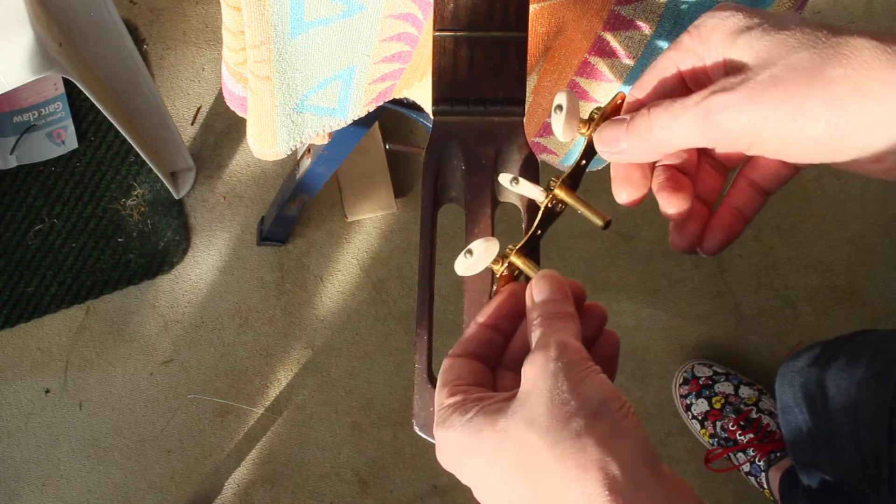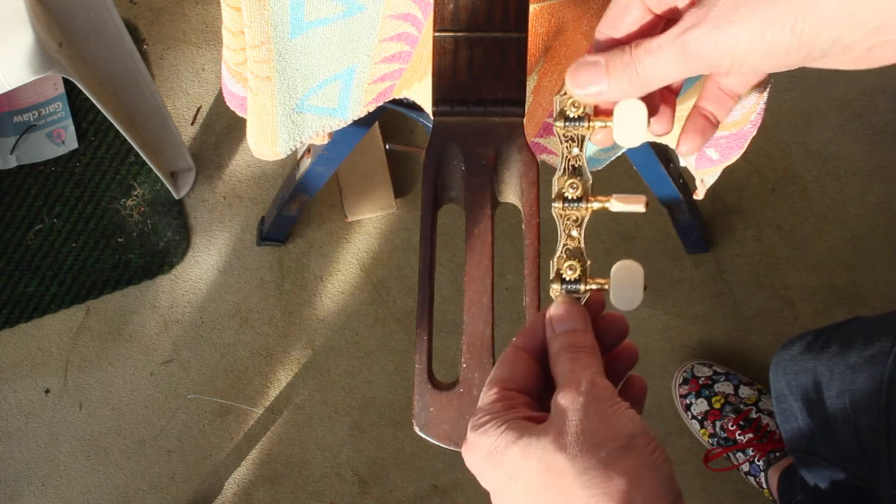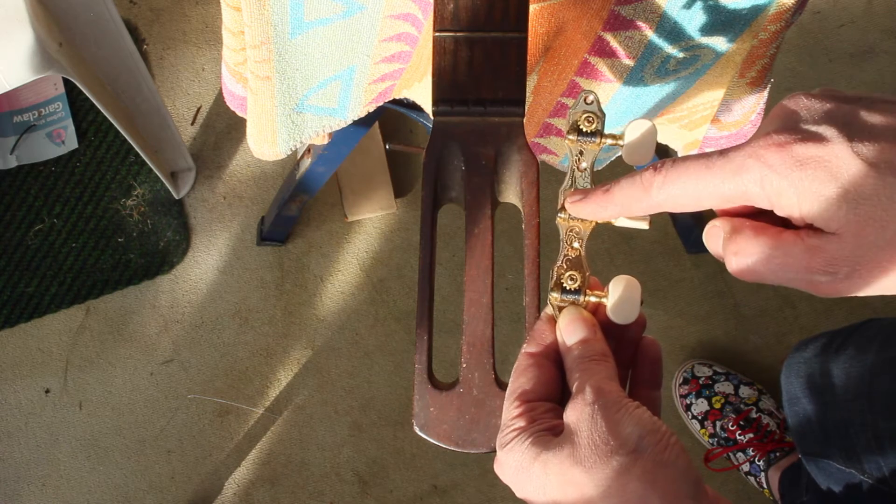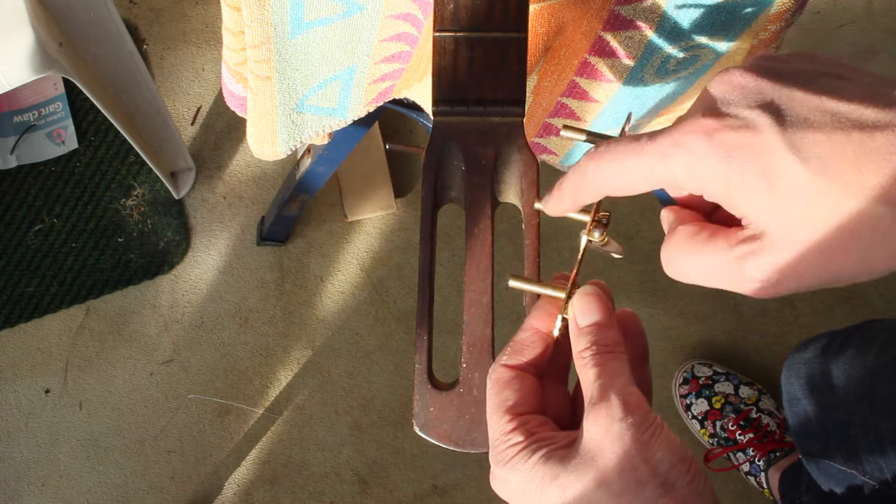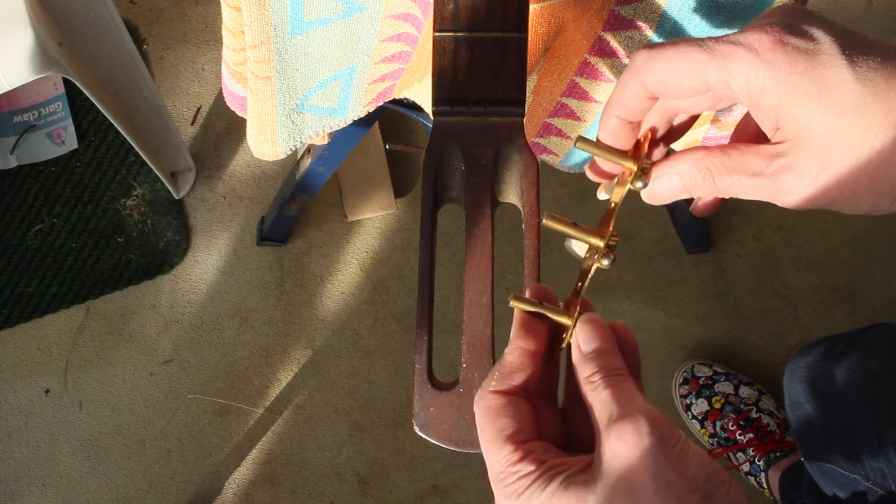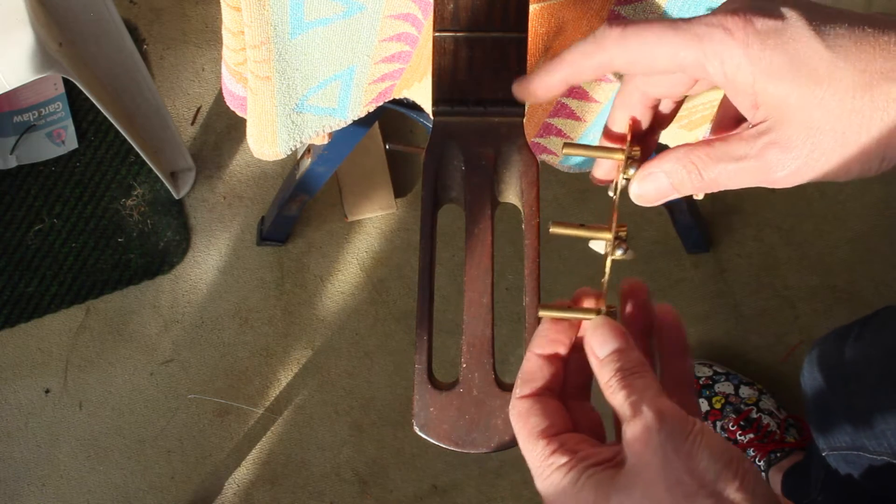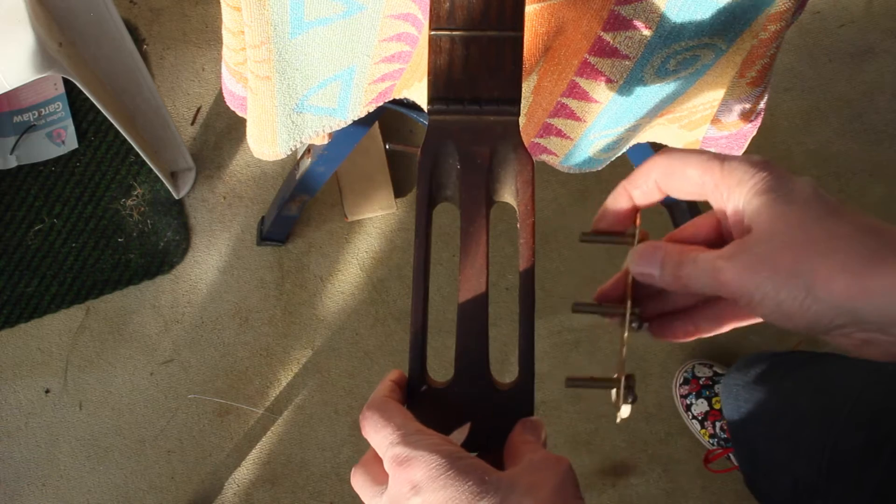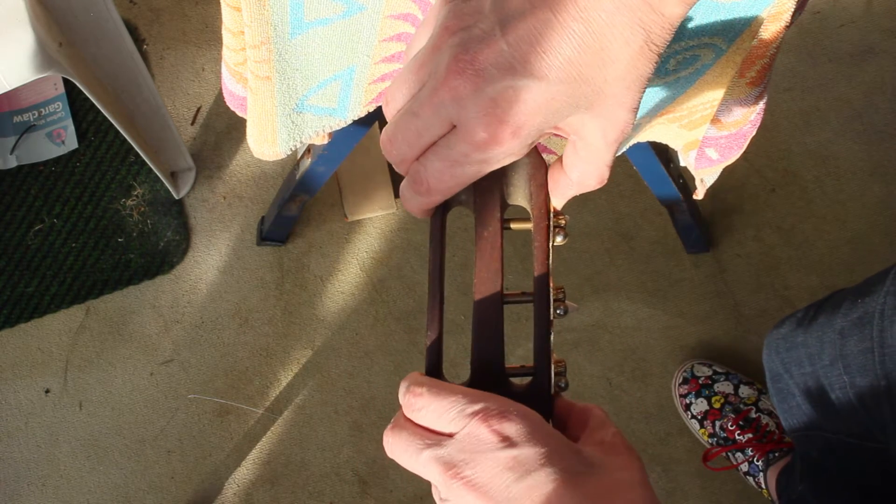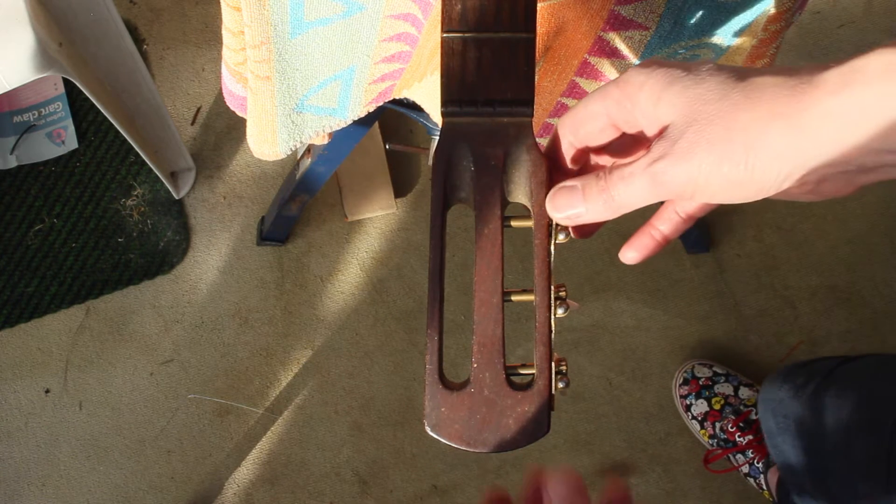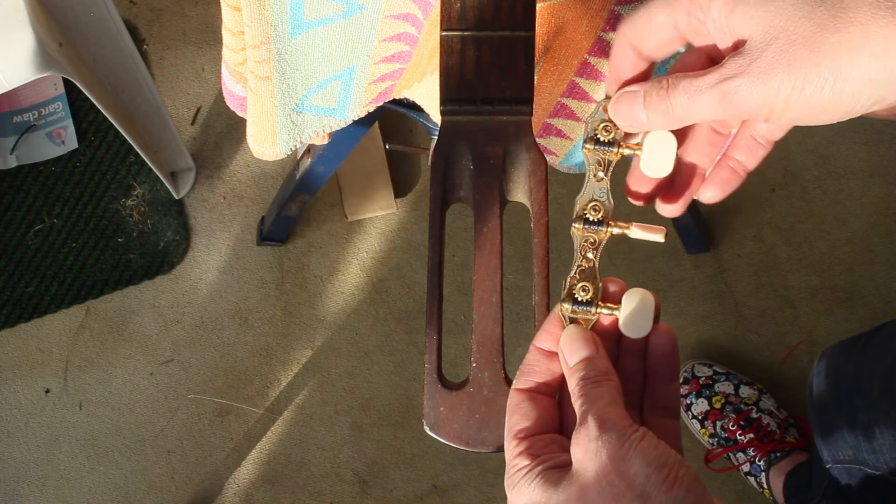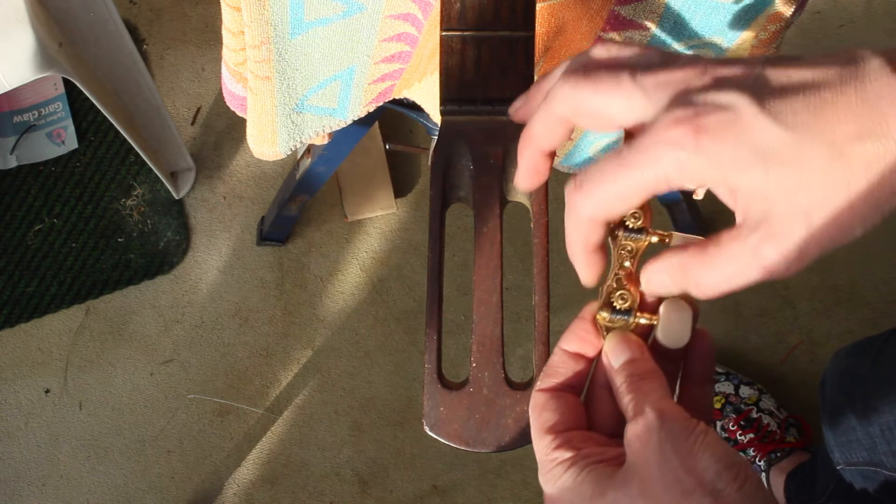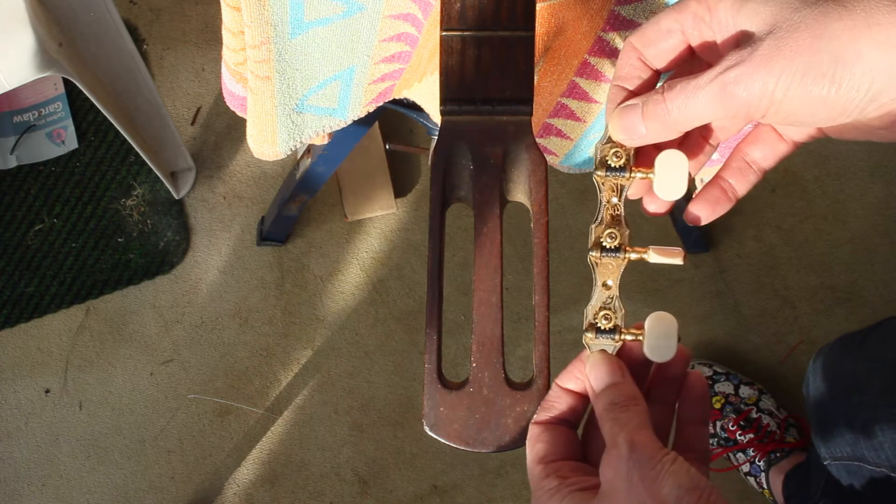Not so. These machine heads are on loan from a luthier and they are special. Usually machine heads have a 35mm pitch between the posts, 70mm between the outer two. These are 36mm, they are 72mm across the outer posts. And 35mm will not fit in this guitar. They look to be period accurate. I think if I put these on they would look a bit too sparkly for this guitar.